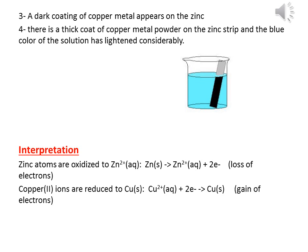Now we need to discuss this observation. First, zinc atoms are oxidized to Zn²⁺. Zn is a reductant, so Zn lost two electrons. Then copper(II) ions are reduced to Cu. Cu²⁺ gains two electrons to form Cu.